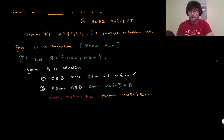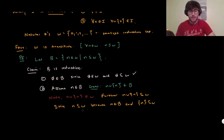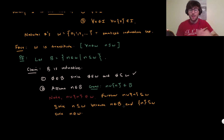Since n is in B, we know n is a subset of omega. Also, the set {n} is a subset of omega since n is in omega. Together, n ∪ {n} is a subset of omega. By definition, B consists of all things in omega that satisfy this subset property.